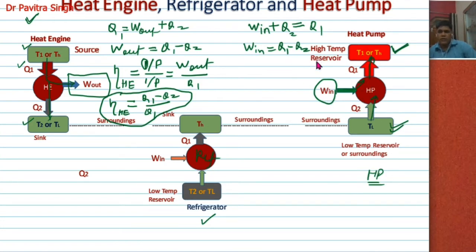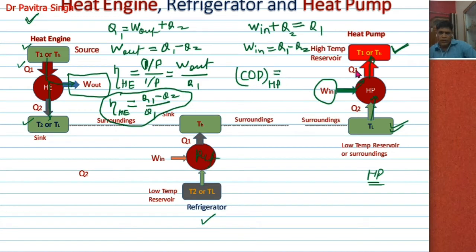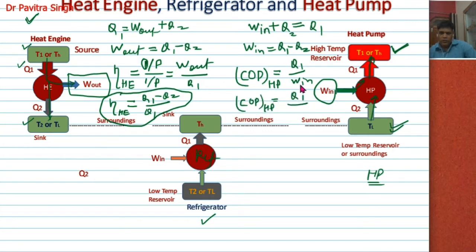W_in equals Q1 minus Q2, where W_in is the work absorbed by this heat pump. Now we will calculate the coefficient of performance of the heat pump. Coefficient of performance of heat pump equals desired effect upon input. The desired effect is Q1 and the input is W_in. Hence, coefficient of performance of heat pump equals Q1 upon W_in equals Q1 upon Q1 minus Q2.